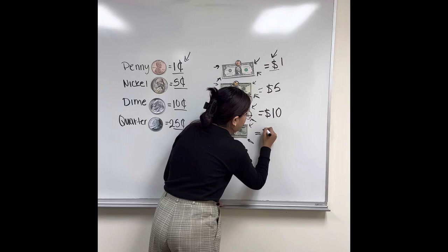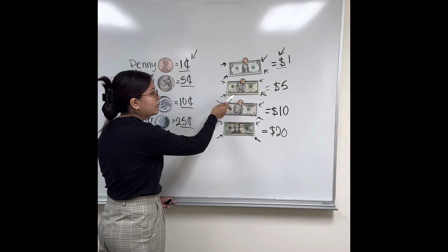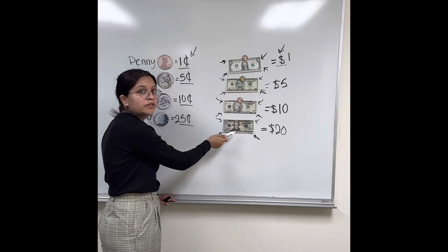So this one will be one dollar, this one will be five dollars, this one will be — ten dollars. Good job. And this one will be? Twenty dollars. Good job.